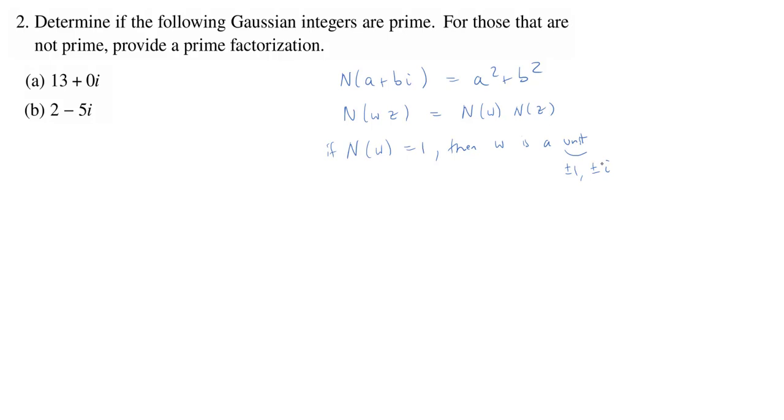We also know that in the Gaussian integers, being an indecomposable element and being a prime element are the same. So what we can do if we want to prove that something is prime is we can show it's indecomposable. Let's recall what that means.